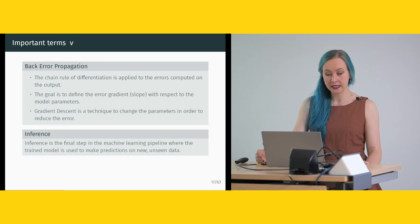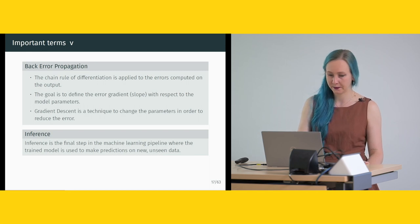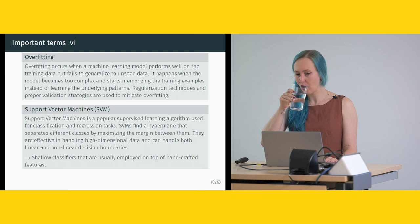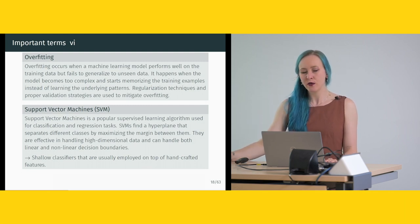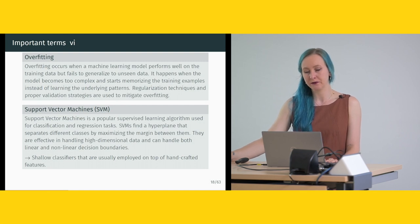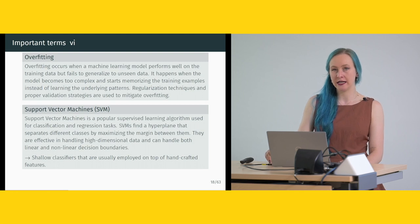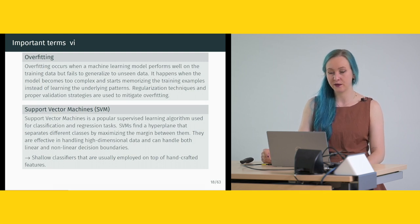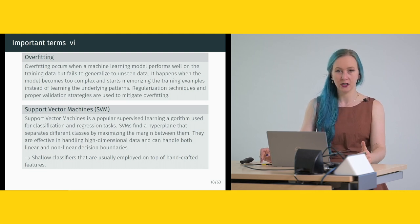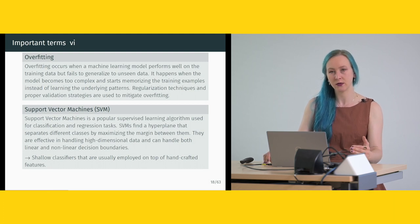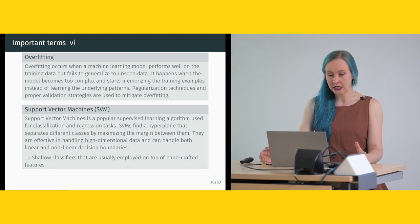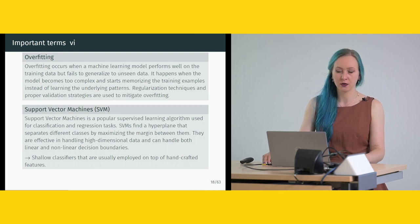Inference is the final step in the machine learning pipeline where the trained model is used to make predictions on new unseen data. Overfitting occurs when a machine learning model performs well on the training data but fails to generalize to unseen data. This happens when the model becomes too complex and starts memorizing training examples instead of learning the underlying patterns. It can be difficult to tell what exactly the model is learning, and we want to ensure it learns general things. Regularization techniques and proper validation strategies are used to mitigate overfitting.